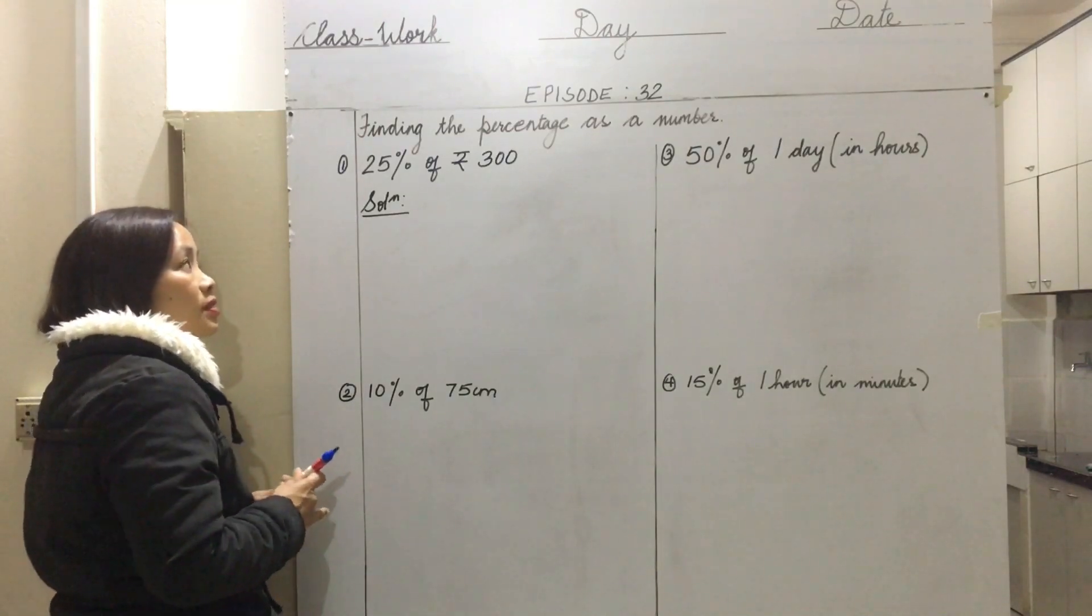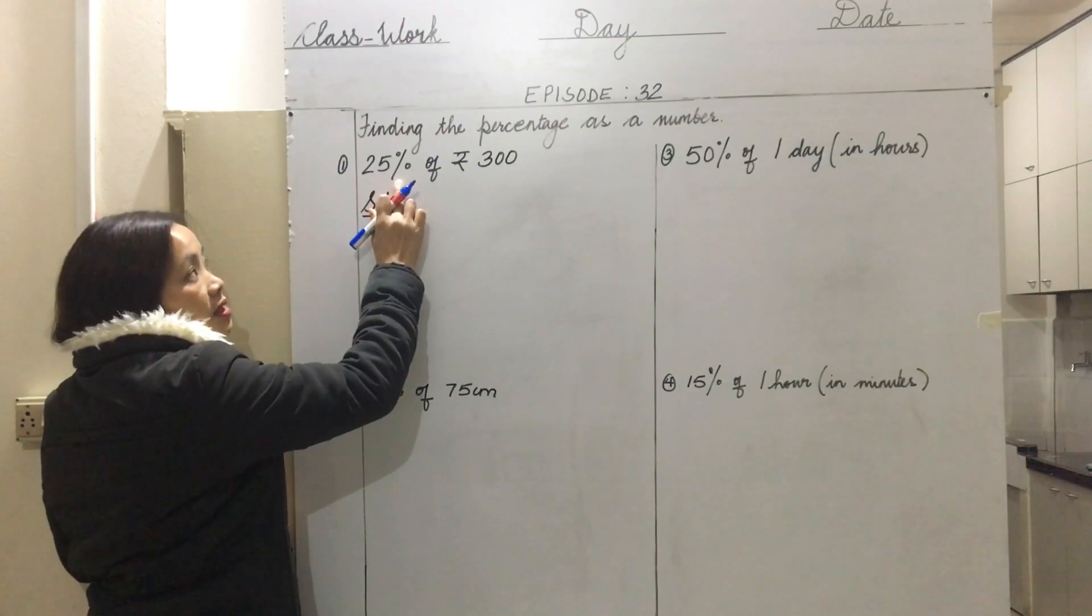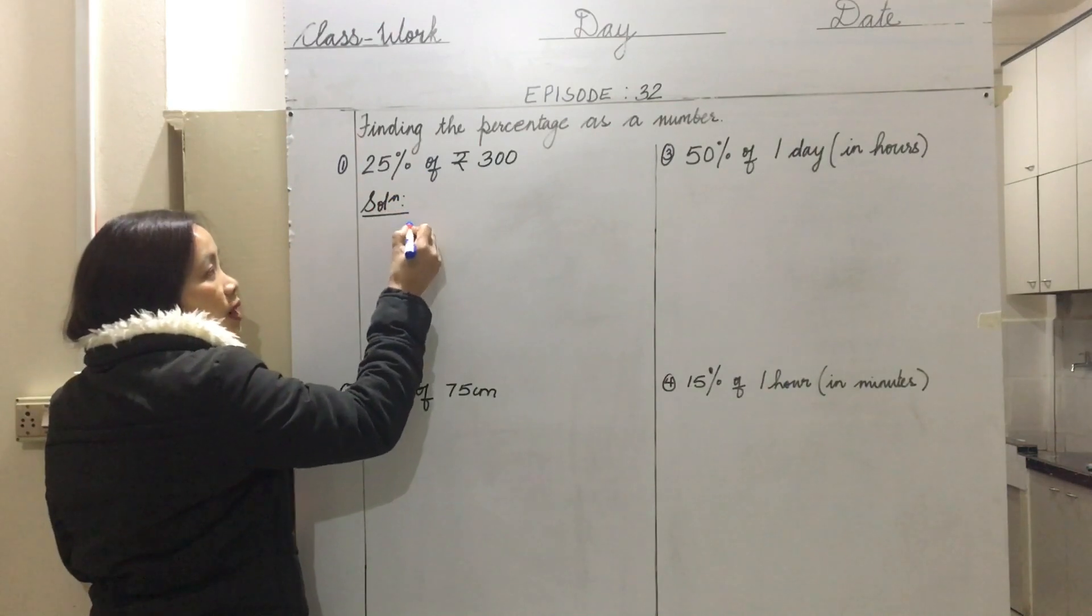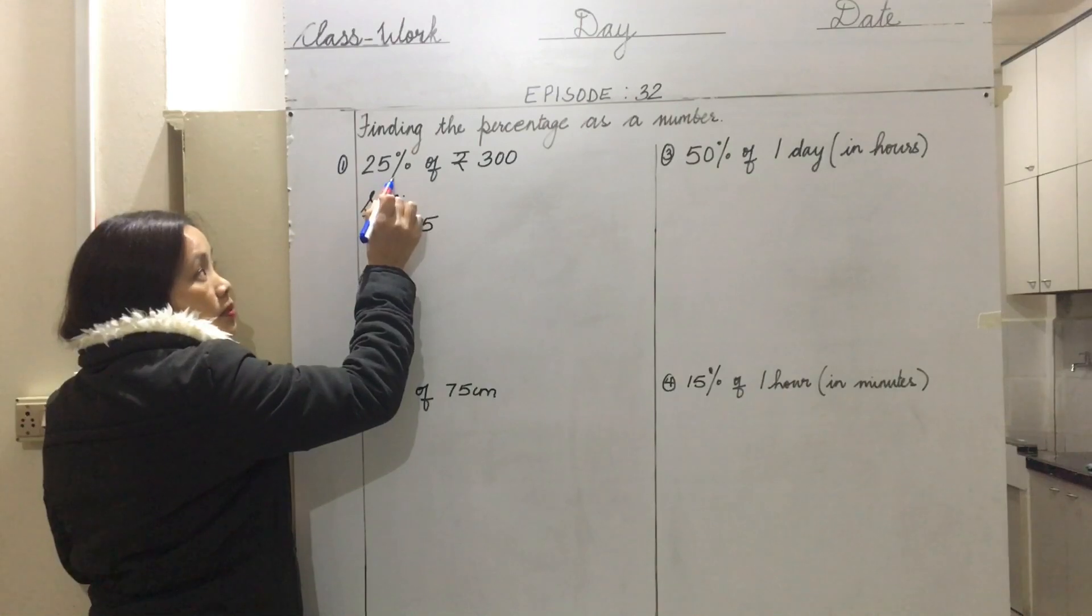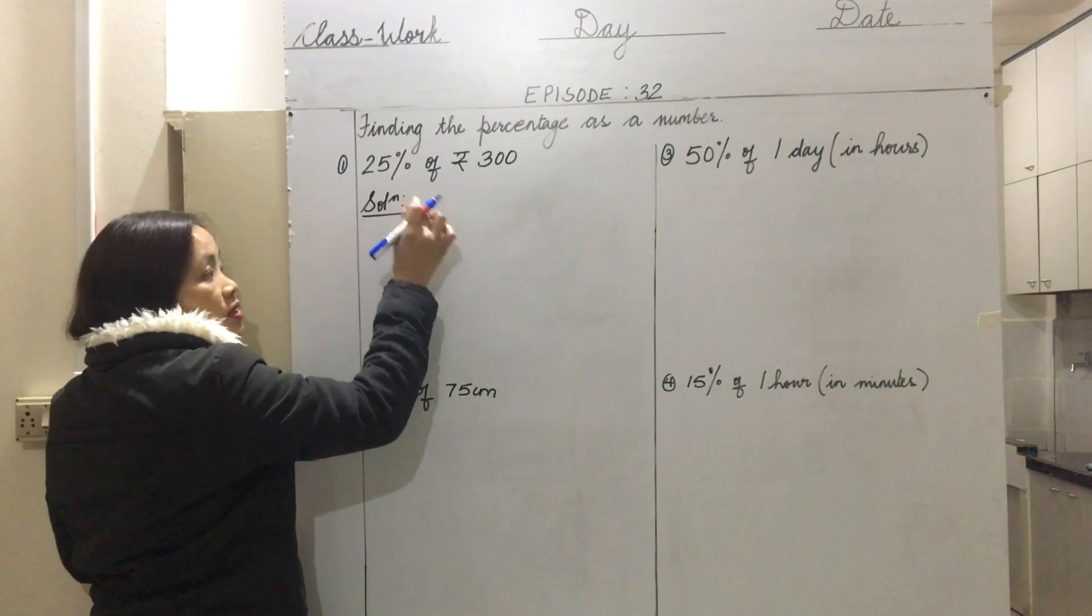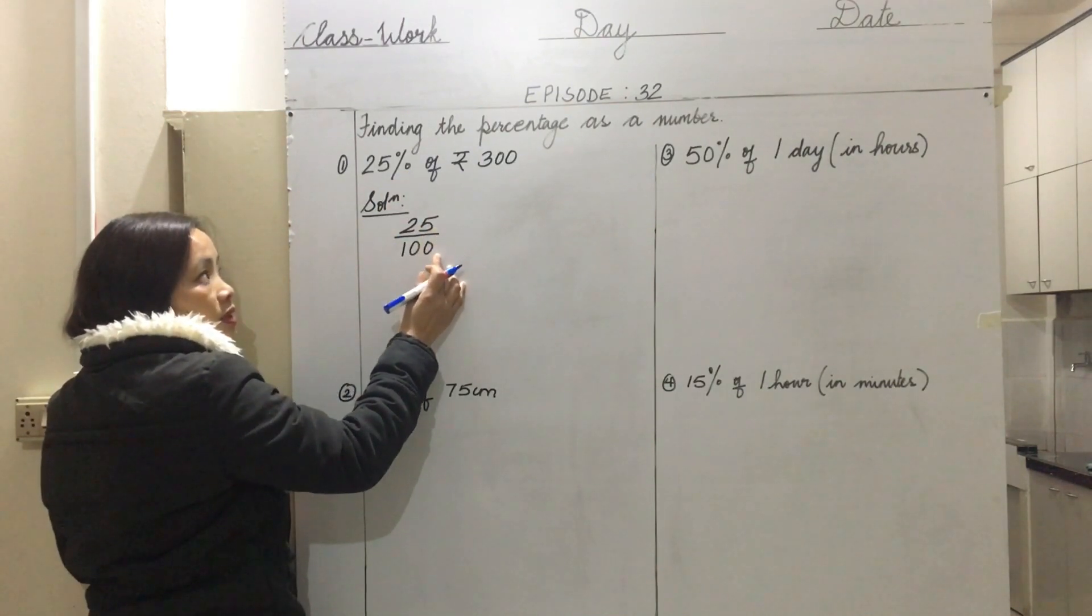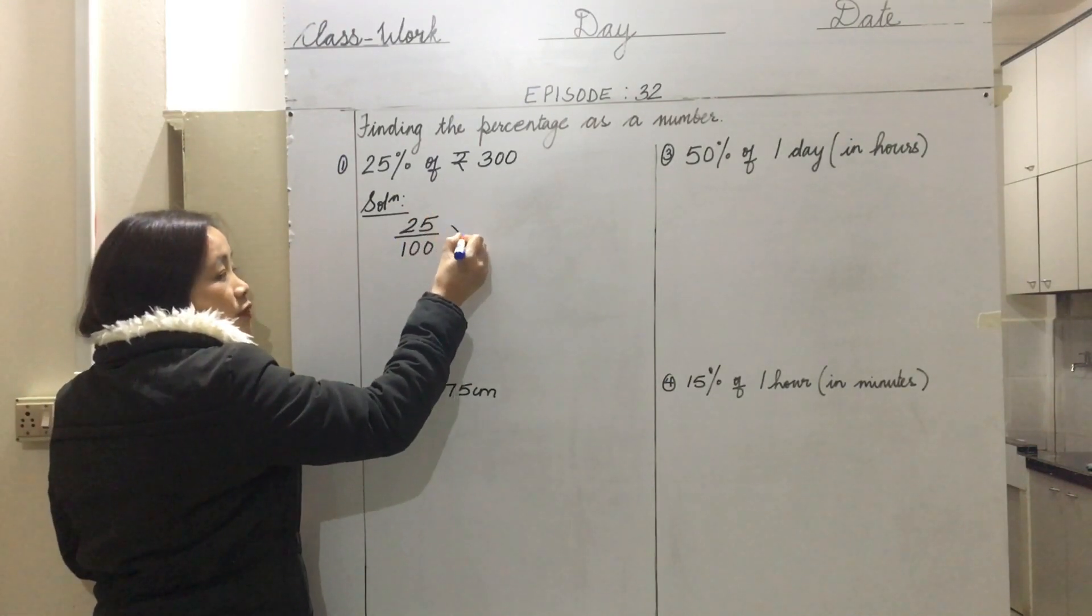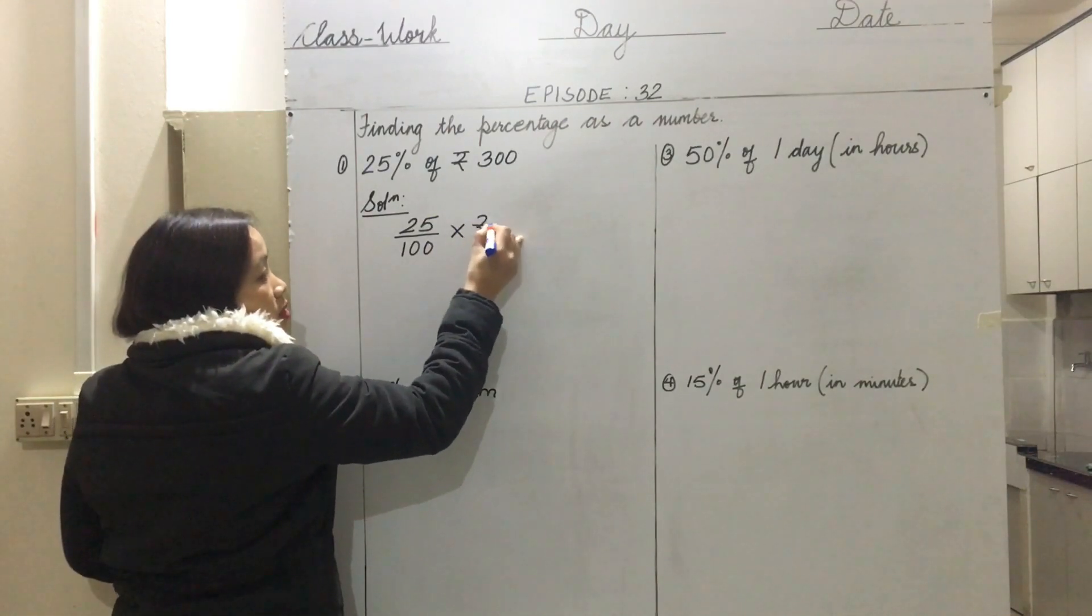When we write percentage symbol, as we said before in the previous class, this means divided by 100. So we will be removing percentage symbol and writing divided by 100. Percent means out of 100, so 25 divided by 100. Instead of 'of' we will be putting multiplication symbol, and then followed by rupees 300.